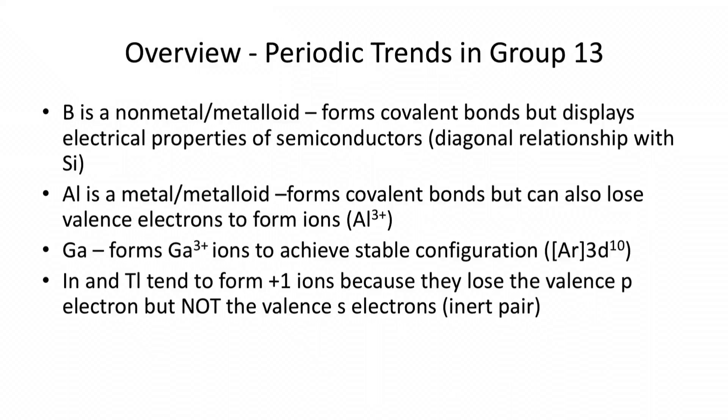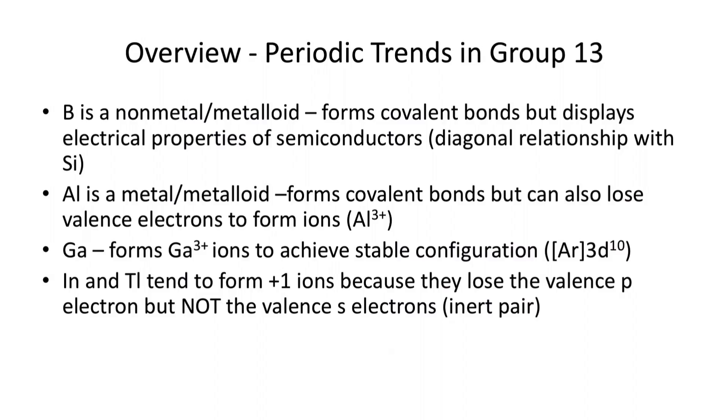As an example, let's look at some periodic trends in group 13, which is the boron family of the periodic table. Boron happens to be a nonmetal/metalloid — it's a little hard to describe. It forms covalent bonds the way nonmetals do, but it also has some properties in common with semiconductors. Because of a diagonal relationship with silicon, it behaves like a metalloid in some cases but more like a nonmetal in others.